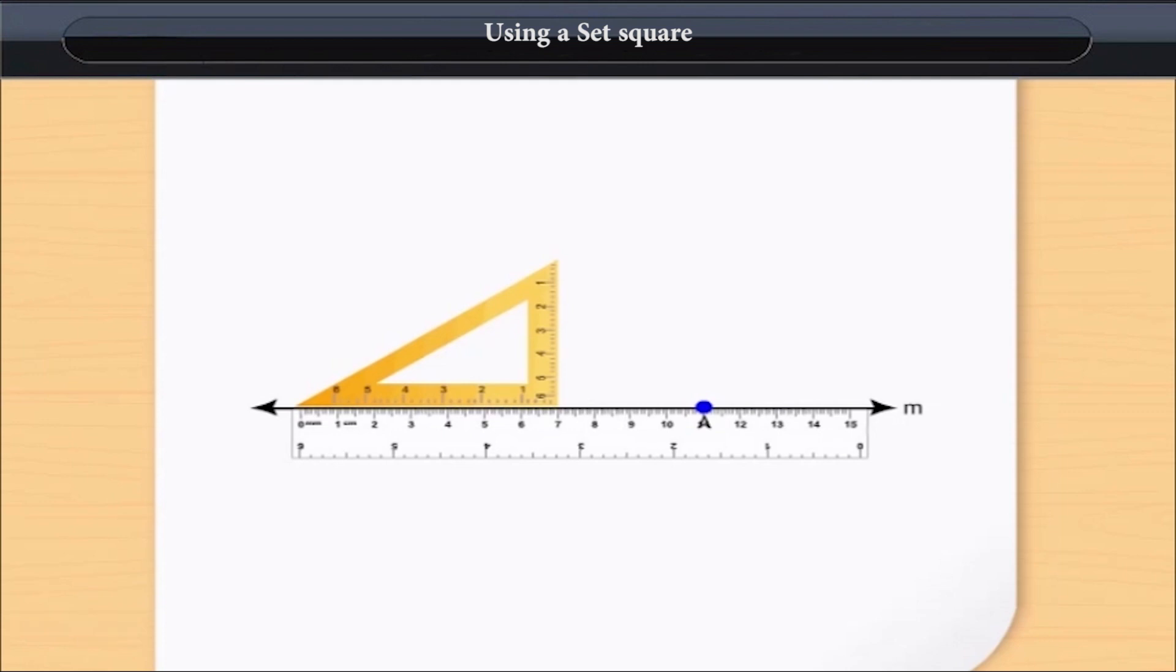Now slide the set square to the side of the ruler's edge until its right-angle corner coincides with point A.